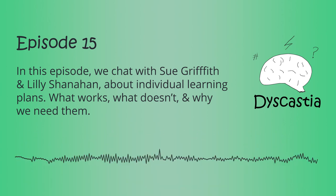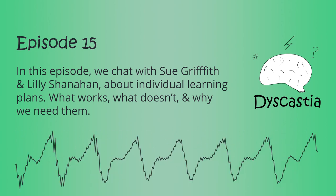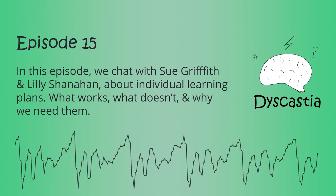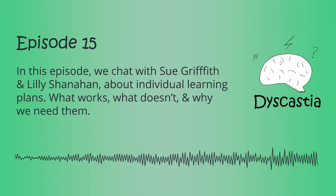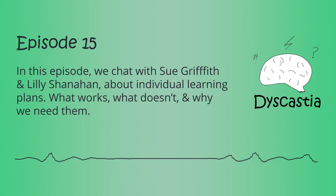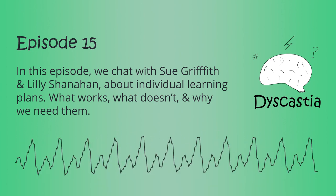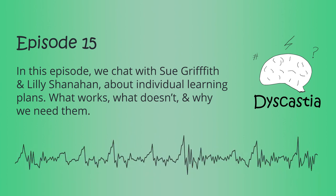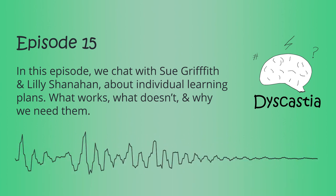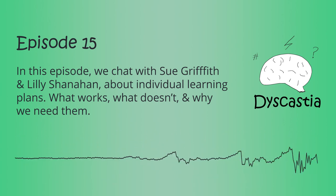Lily, around homework — what did teachers do in light of your plan that helped? It was different with each teacher. When I was in Year 6 and 7, my teacher said no one in her class was going to do homework, and that she'd help anyone who was struggling at school — because if you're struggling at school and you go home and you're on your own, you're still not going to be able to do it. She was an amazing teacher with that policy.